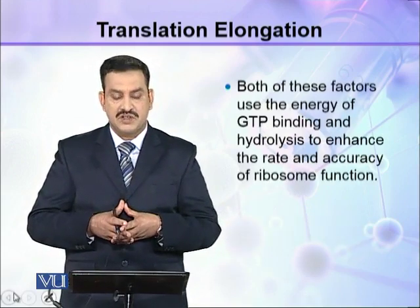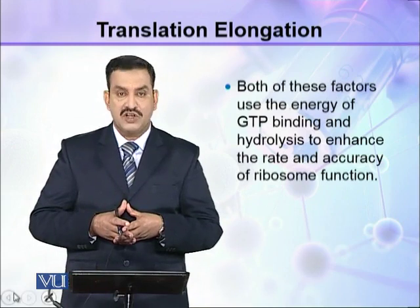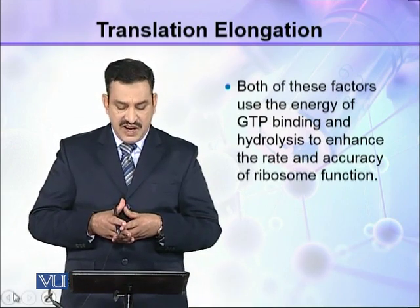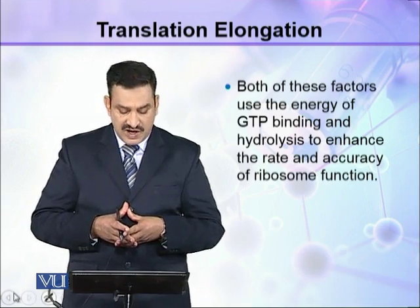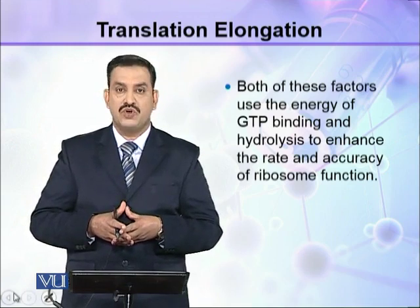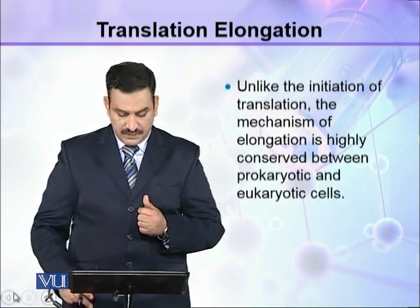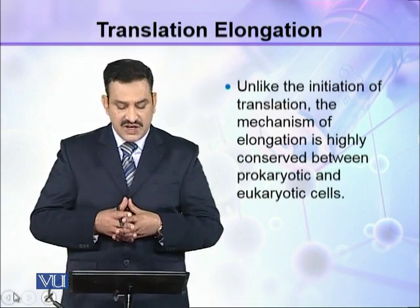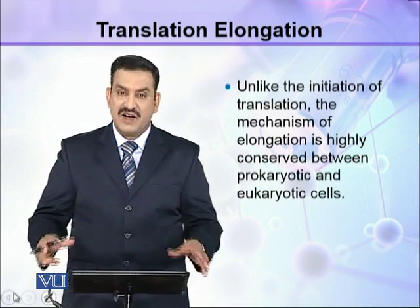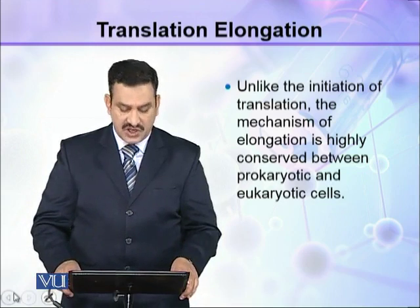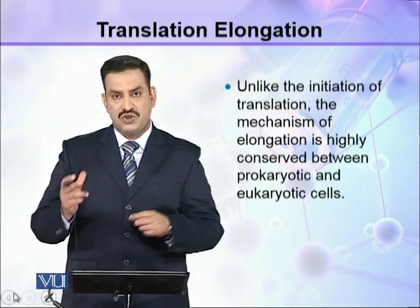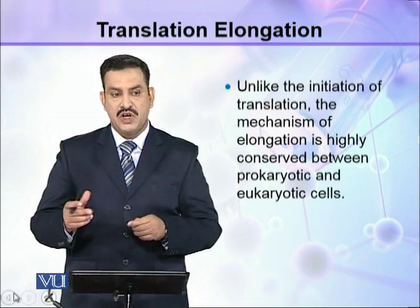Two auxiliary proteins known as elongation factors control these events. Both of these factors use the energy of GTP binding and hydrolysis to enhance the rate and accuracy of ribosome function.